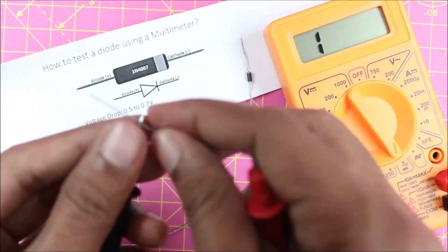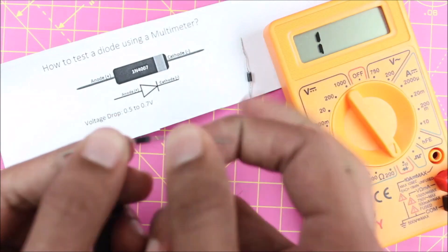Now again, you have to swap the terminals. This is the reverse biasing condition and you can see it shows one. So if this works like this, it means the diode is working.